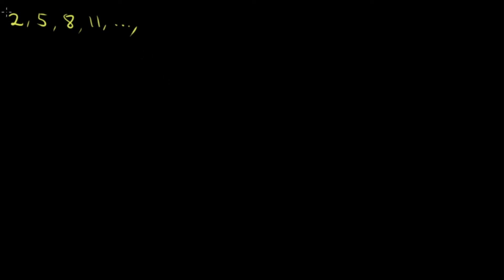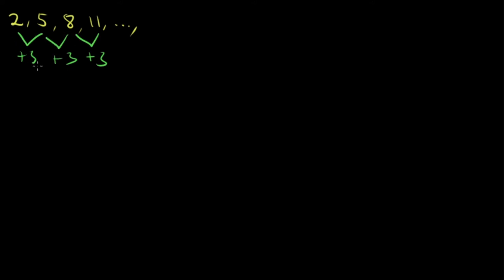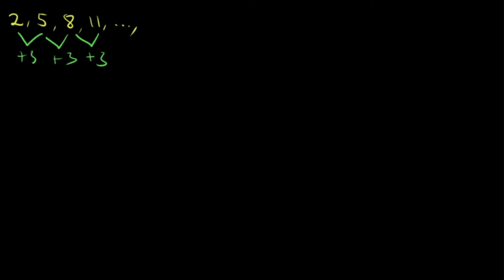We can say this is an arithmetic sequence because there is a common difference. To get from 2 to 5, we add 3. From 5 to 8, we add 3. From 8 to 11, we add 3 again. Another way to find the common difference is to subtract a term by the term preceding it: 11 minus 8 is 3, 8 minus 5 is 3, 5 minus 2 is 3. So the common difference is 3, confirming this is an arithmetic sequence.